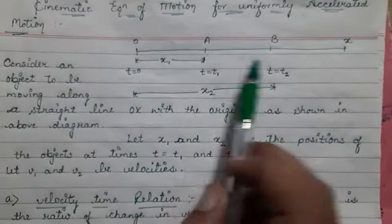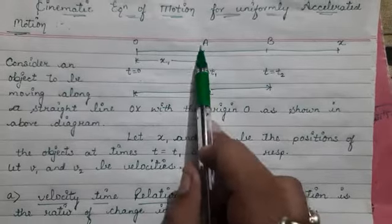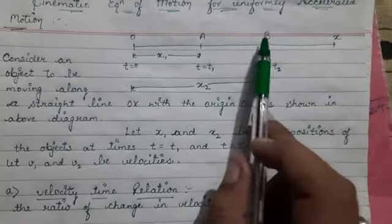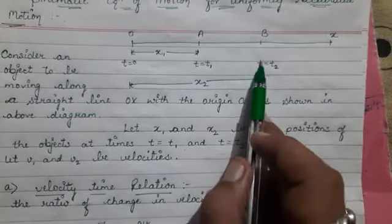We consider two points in a straight line. At point first, T is equal to T1. At point B, time is equal to T2.